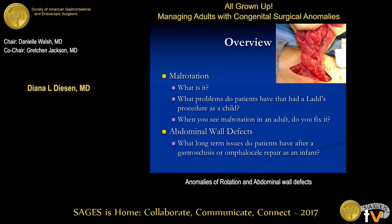Just an overview of my talk. I'm going to talk about malrotation — what it is, in case you haven't treated it since you were on a pediatric surgery service as a resident — and what a Ladd's procedure is, what we do surgically to decrease the risk of volvulus. Then I'll talk about what problems these children or adults can have if they had a Ladd's procedure as a child, and what to do if you diagnose malrotation in an adult. I'll then touch on gastroschisis and omphalocele, some abdominal wall defects, and what problems they have once they reach adulthood.